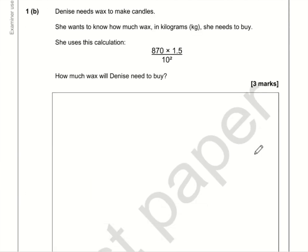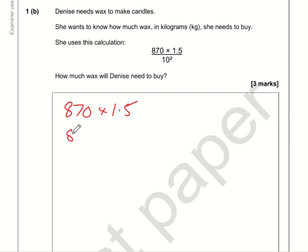So we're using this calculation, and the first thing we need to do is work out 870 times by 1.5. What I would probably do is make this number 10 times smaller and make this number 10 times bigger, and there we go. So we need a column method for this.